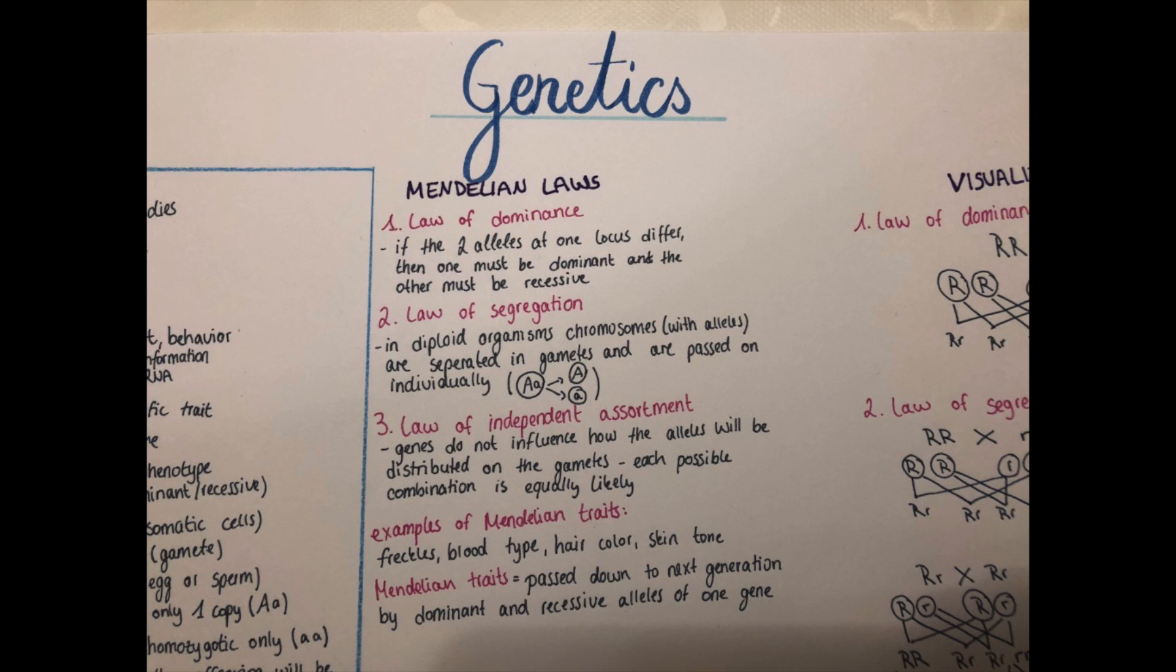The first law is the law of dominance. So if the two alleles which are at one locus, so at one place on the chromosome, if those are different then one of them must be dominant and the other one must be recessive.